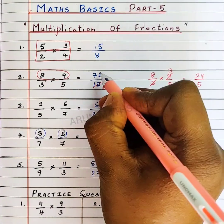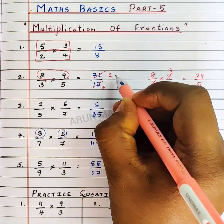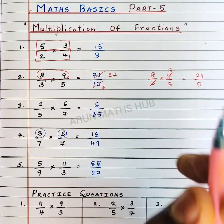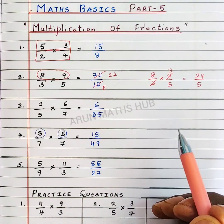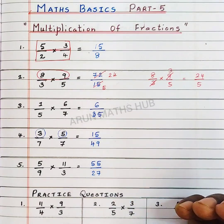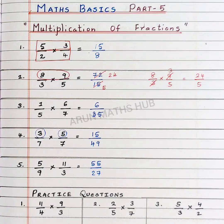3 5s are 15, 3 2s are 6, and 3 4s are 12. You will get the same. Hopefully, these videos are helping you.